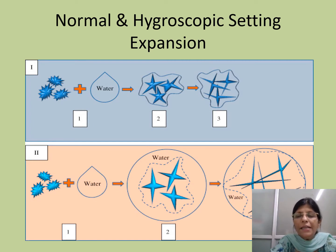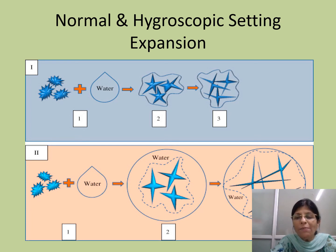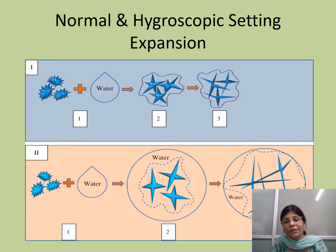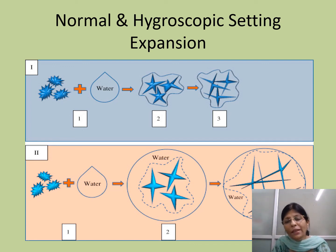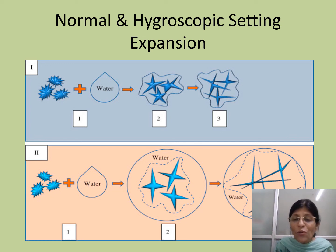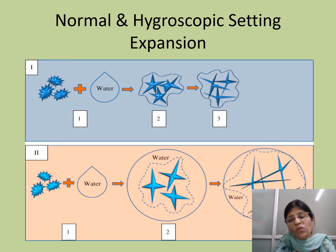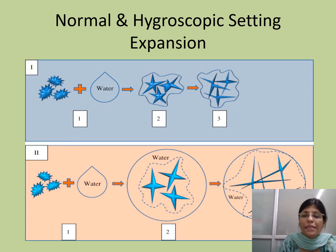Regarding hygroscopic setting expansion: mostly all factors that increase normal setting expansion also increase hygroscopic setting expansion. In addition, there are two more factors. First, the time at which you immerse the mix in excess water — at the end of the initial setting time the material should be immersed; immersing too late means no hygroscopic setting expansion is seen. Second, the amount of extra water you add also contributes to hygroscopic setting expansion.